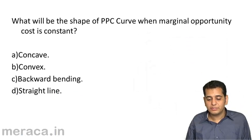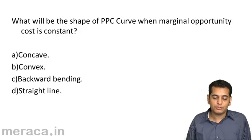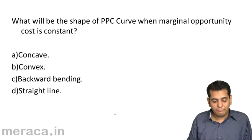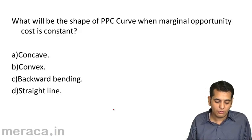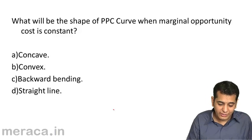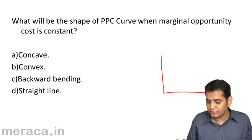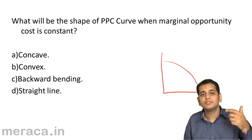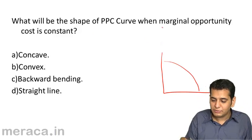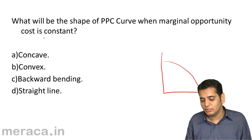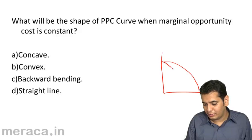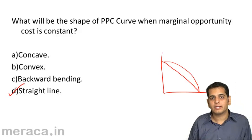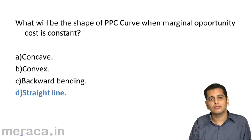Next: what will be the shape of the production possibility curve when marginal opportunity cost is constant? Options: a — concave, b — convex, c — backward bending, or d — a straight line. Generally the PPC is concave because opportunity cost increases, but when marginal opportunity cost is constant, it takes a straight line shape. The answer is straight line.